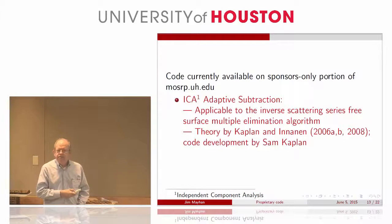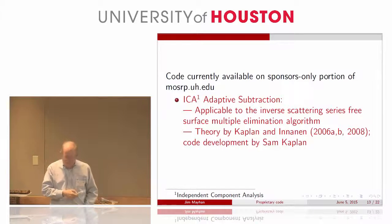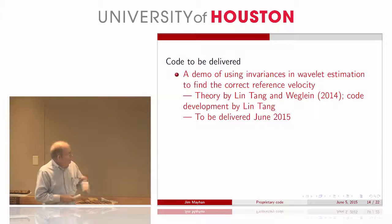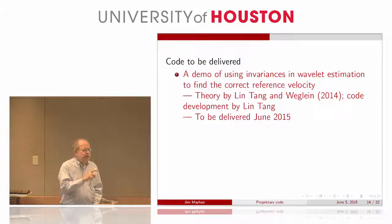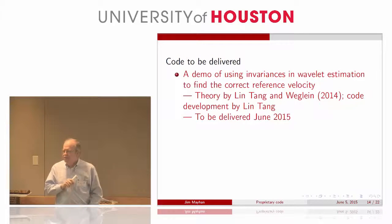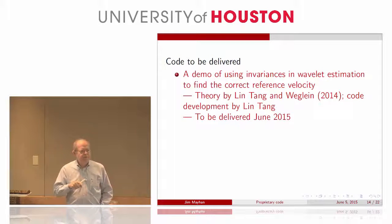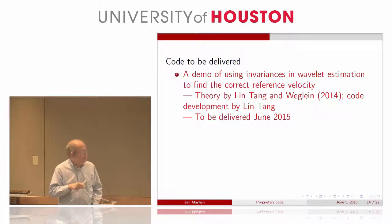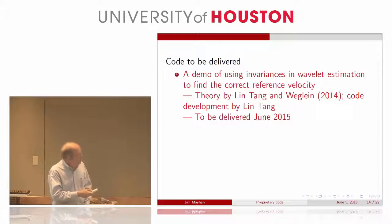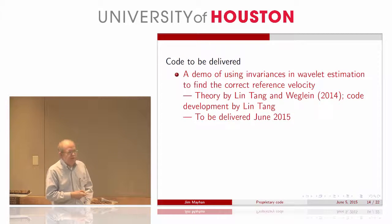That's the 13 sets of code we currently have out there. What do we plan to deliver in the next few months? Lin Tang, when she was here, developed an iterative procedure for estimating the reference velocity when it's unknown — for example, in deghosting. She published the theory in Lin Tang and Weiguan, and she developed the code.